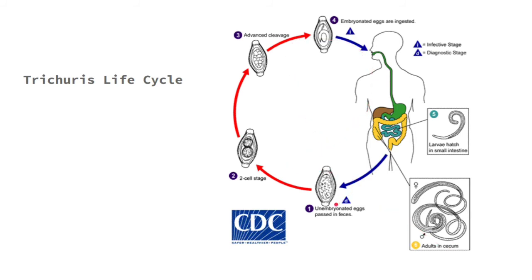The life cycle begins with the unembryonated egg passed in feces, progresses to the two-cell stage, advanced cleavage stage, and then the embryonated egg. Once the embryonated egg is ingested, it passes through the mouth, goes to the small intestine where larvae hatch, and then moves to the large intestine — specifically the cecum — where both male and female adult worms reproduce.